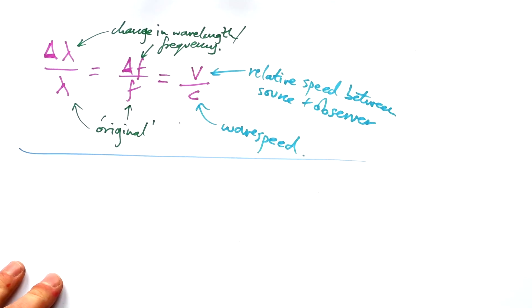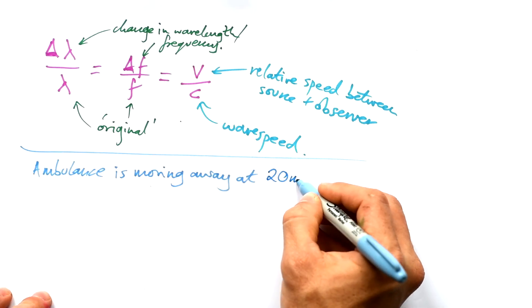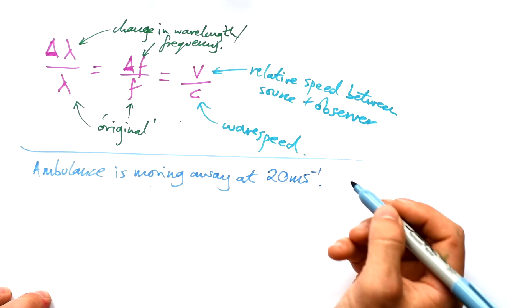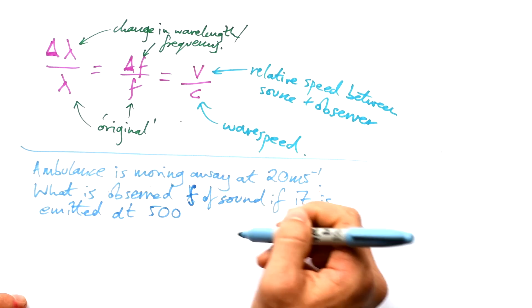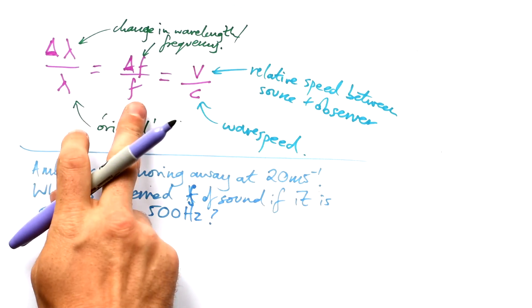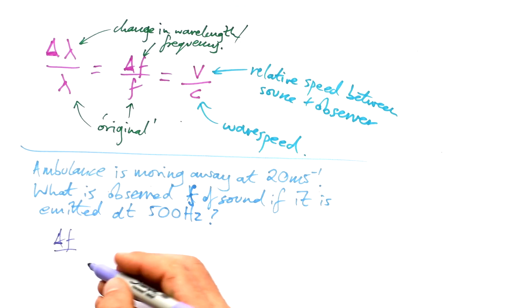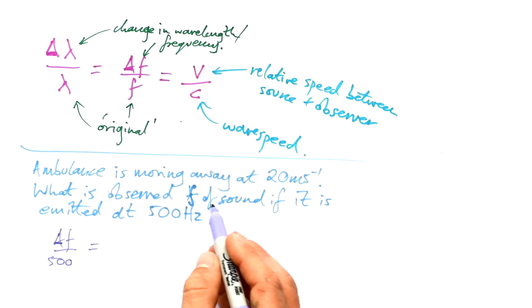Let's say that our ambulance is moving away from you at 20 meters per second. What is the observed frequency of the sound if it is emitted at 500 hertz? So we know we're going to be dealing with frequency here. So delta f divided by the original frequency, so that's 500, is equal to our relative speed, so it's moving away from us at 20, divided by the speed of sound, which is 300.